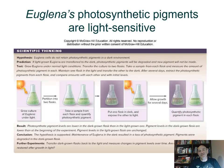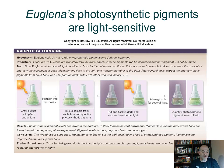They also have a special light-sensitive spot called a stigma that helps guide them toward light if photosynthesis is important. This diagram shows some scientific thinking with side notes showing how science is a process. Euglena exposed to light versus without light shows that over time those kept in the dark had very reduced chloroplasts, and when re-exposed to light, they began to show more active chloroplasts.